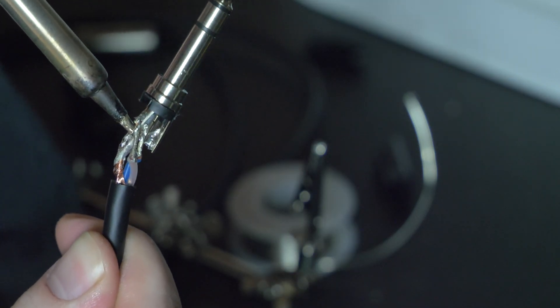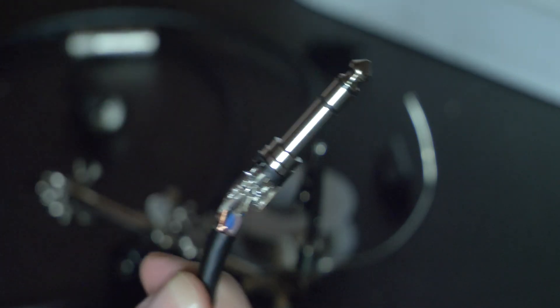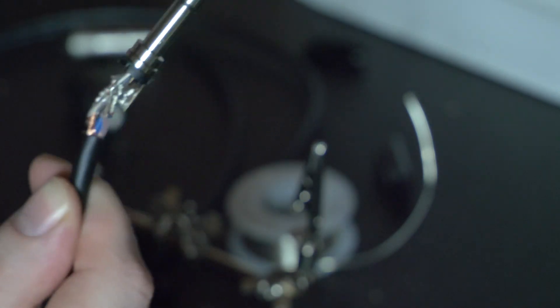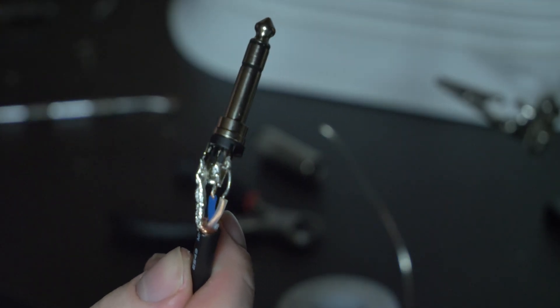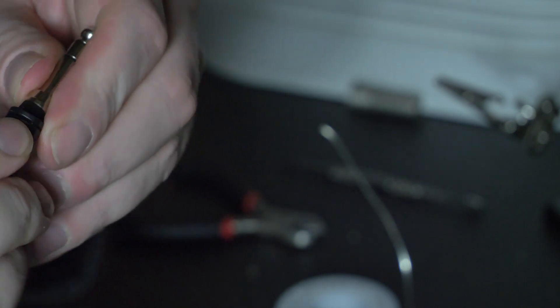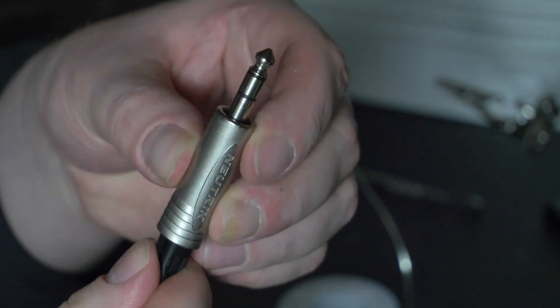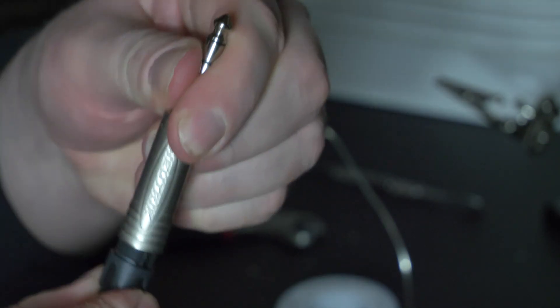Once all the solder has cooled, inspect your connections for any loose cold solders or shorts between wires. If everything looks good, slip the plastic strain relief over your leads and add the metal shield, twisting it together with the boot to form your stereo quarter inch plug.